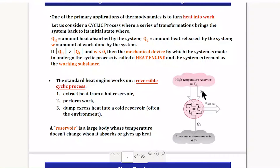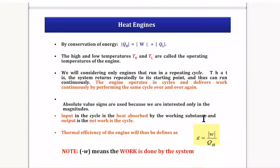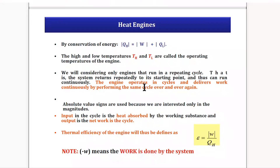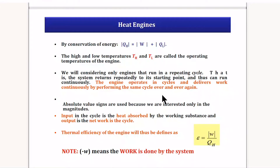According to conservation of energy, QH minus QL equals W — whatever is absorbed minus what is dissipated gives the work. The engine operates between temperatures TH and TL on the absolute scale. The engine must operate in repeated cycles, delivering work continuously. Q and W are written in absolute modulus terms: positive Q means heat is absorbed, negative Q means heat is dissipated; negative W means work is done by the system.